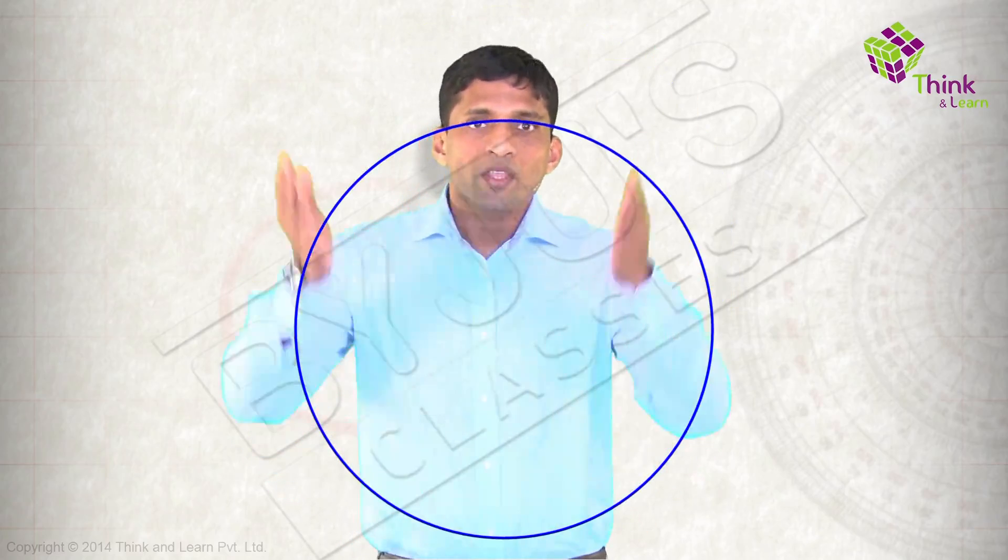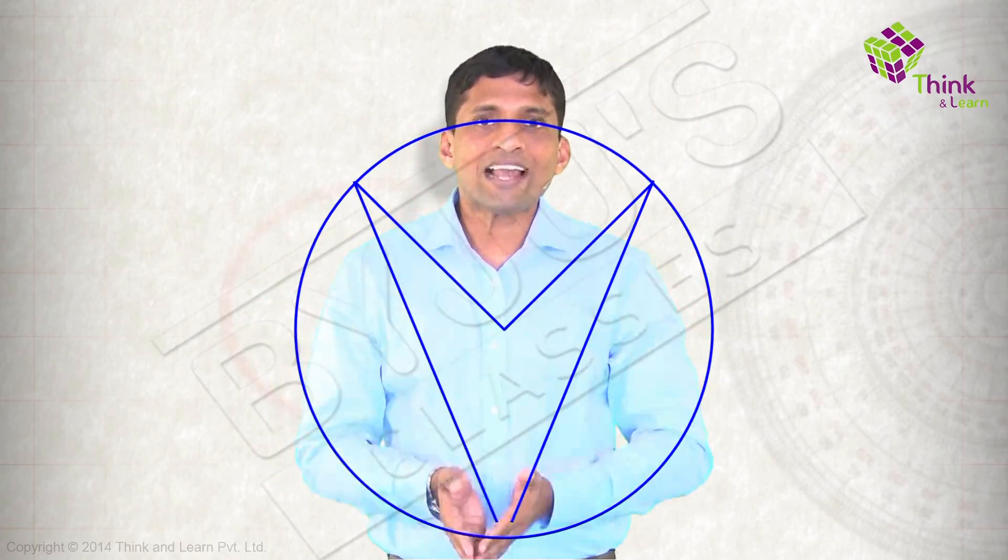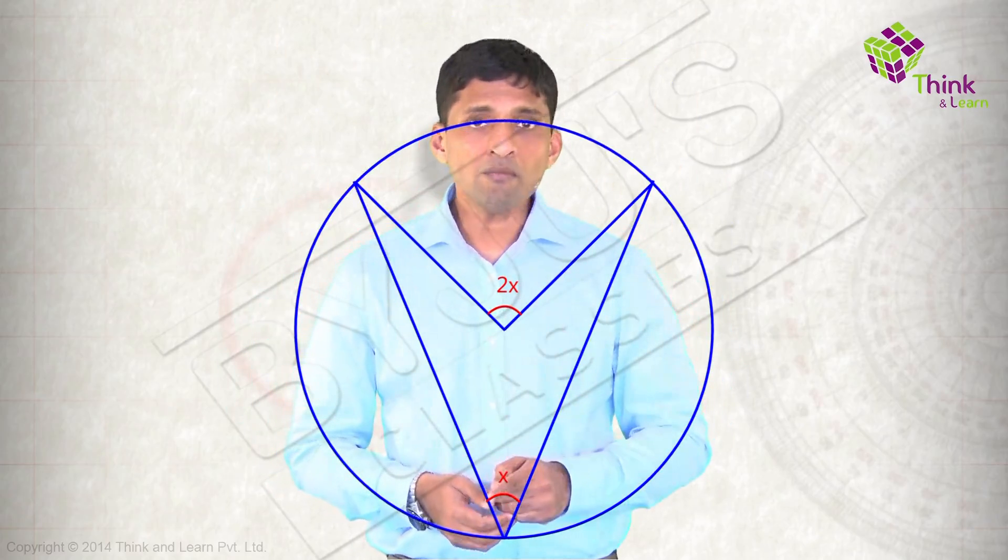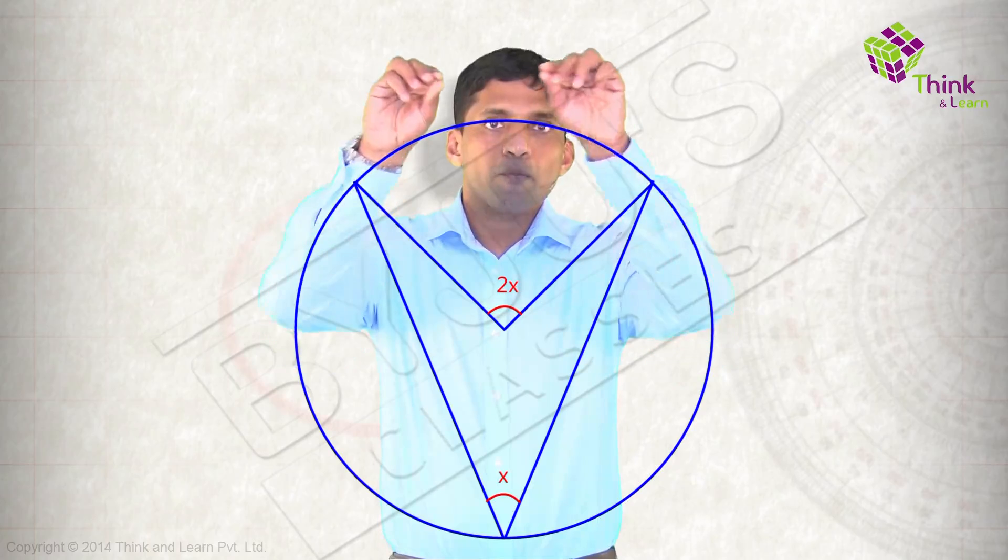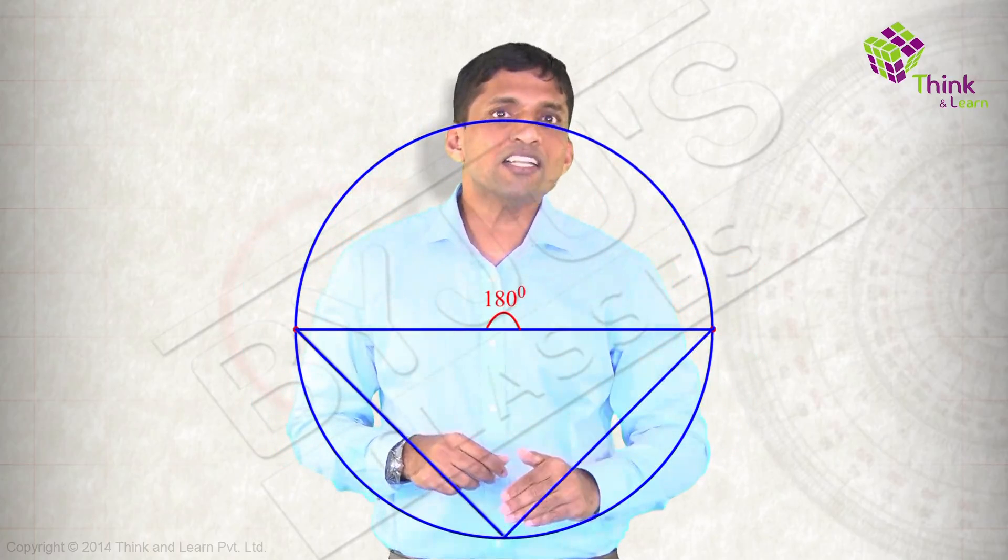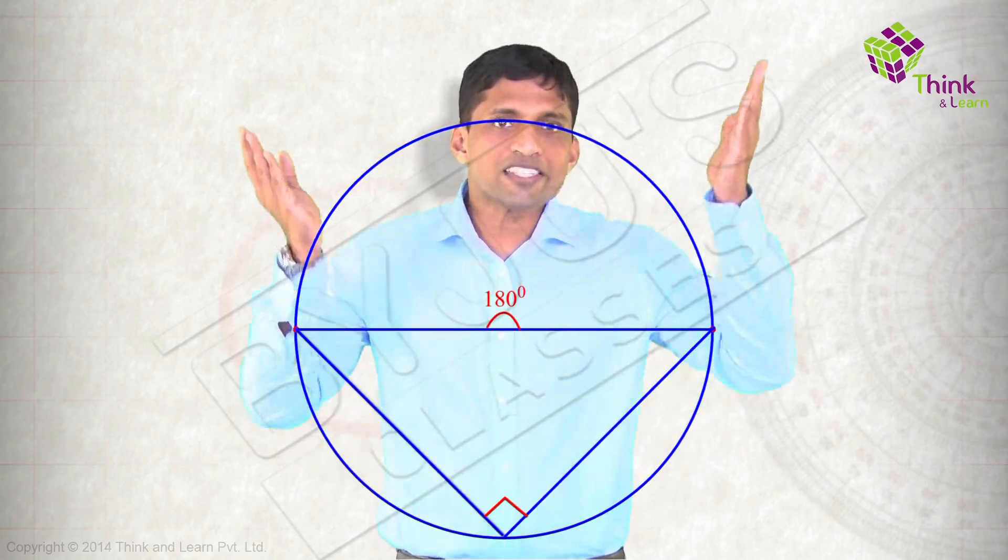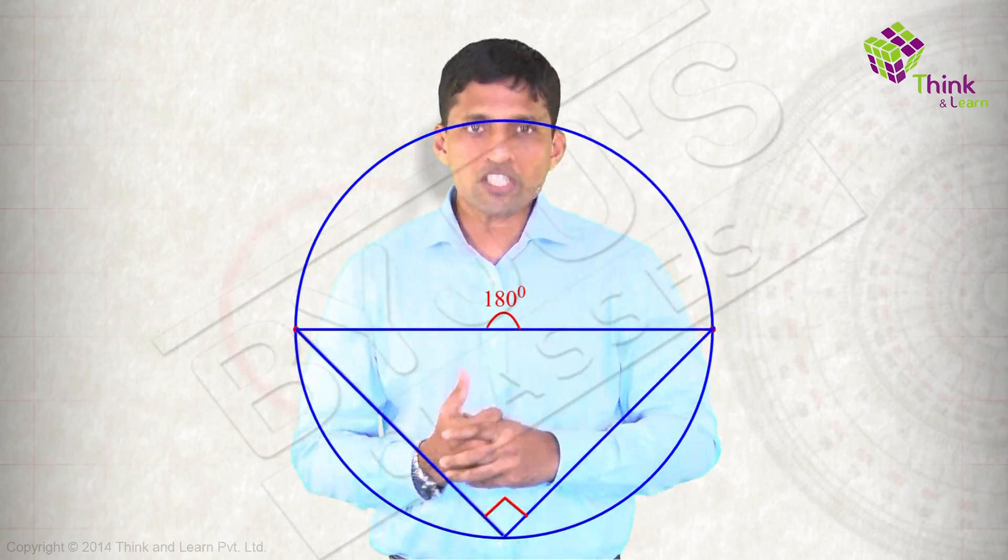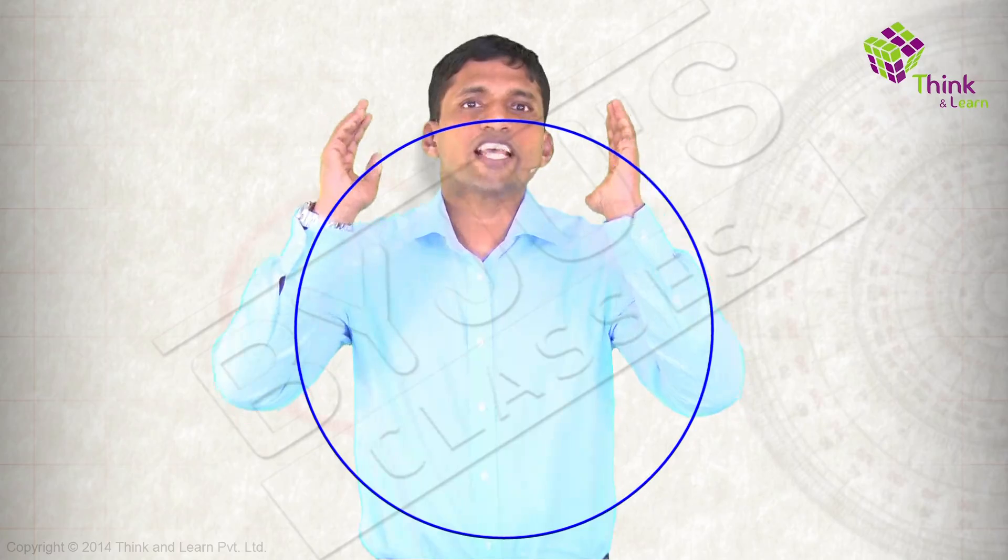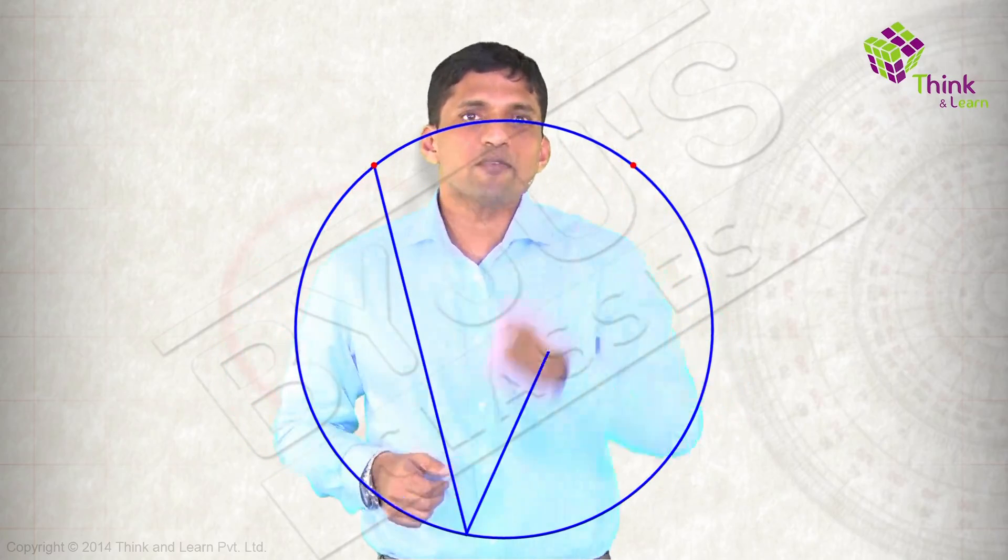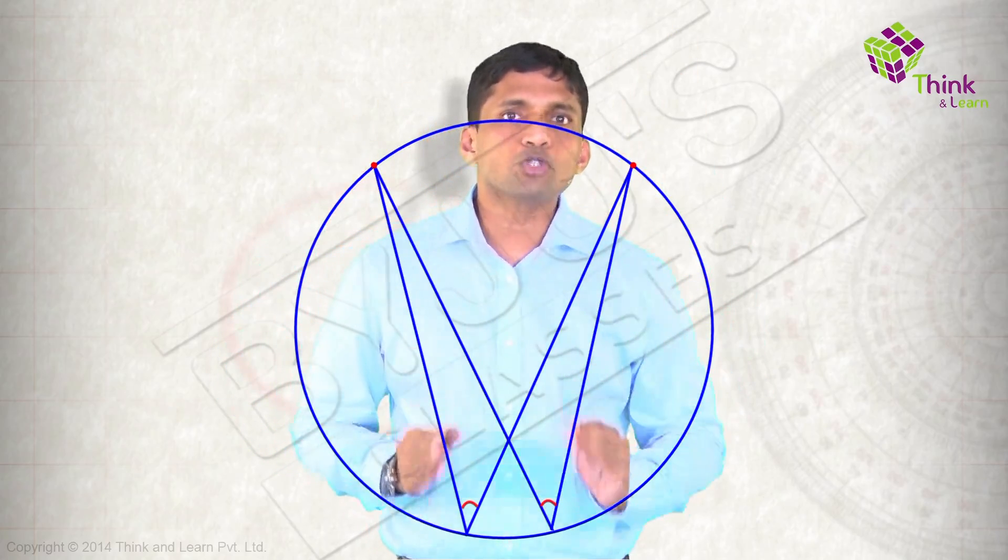Take the circle. This angle to this angle ratio is 2 by 1. That's an important theorem. When I push these two points, this angle to this angle still remains 2 by 1. That is, angle in a semicircle is 90 degrees. If I consider the same segment, angles in the same segment are equal. That is, these two angles are equal.